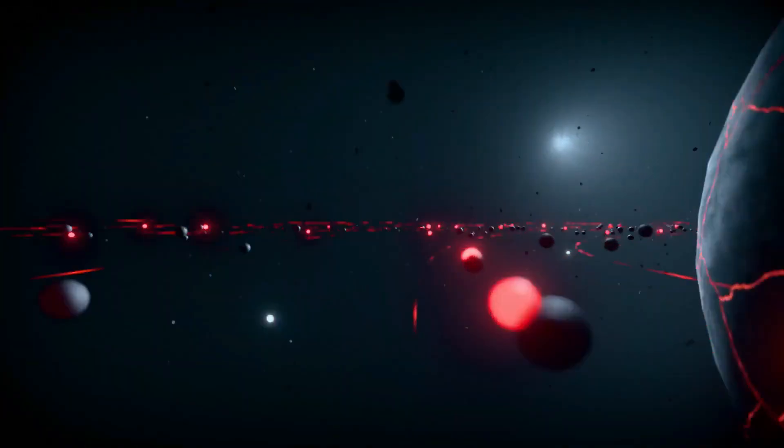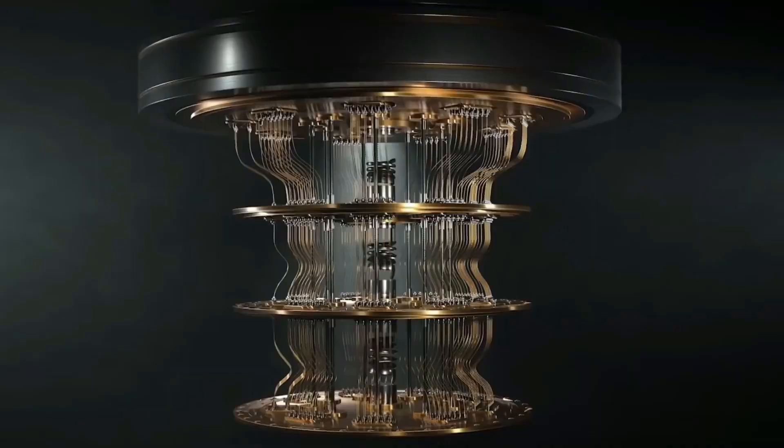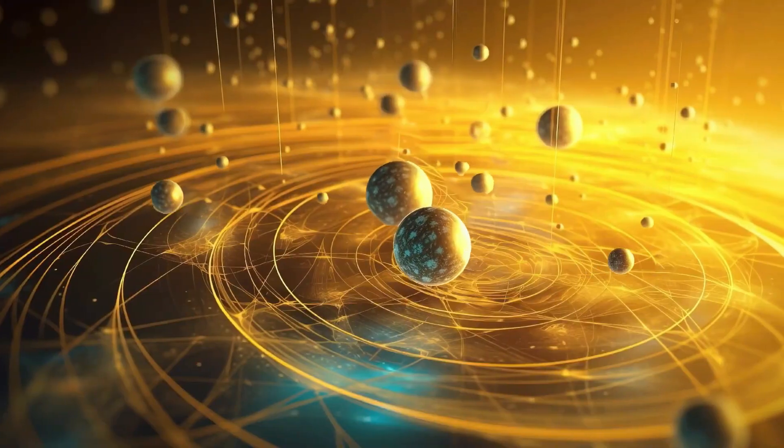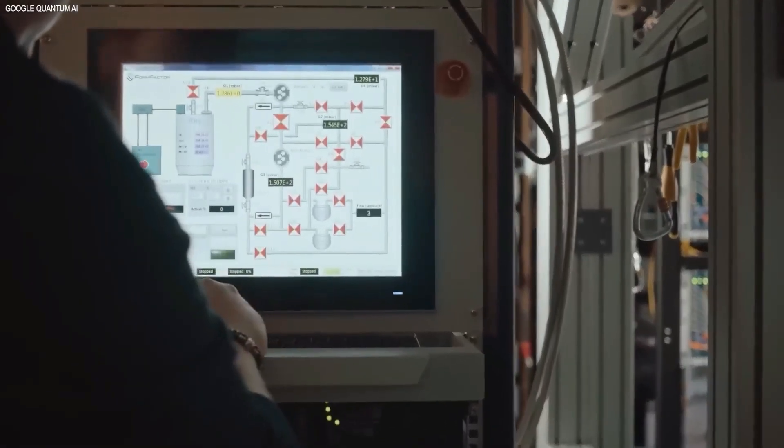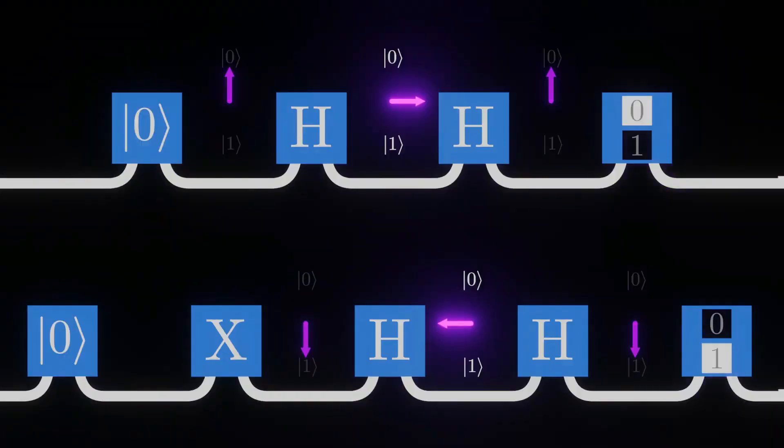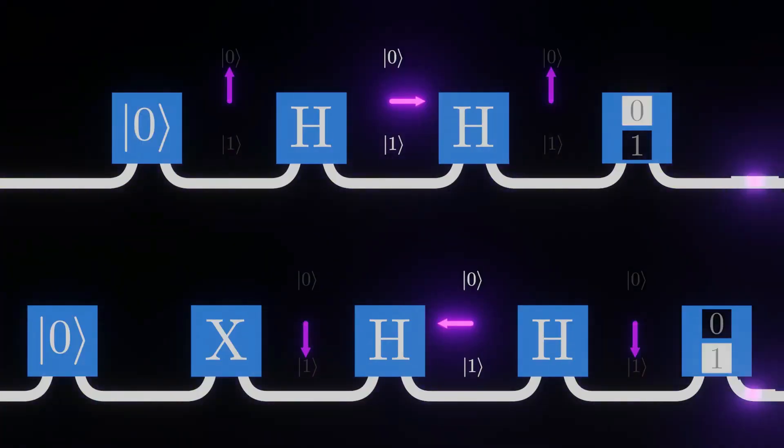This understanding has profound implications for quantum communication and cryptography. Quantum key distribution systems already use entanglement to create theoretically unbreakable communication channels. These systems work because any attempt to intercept the quantum information disturbs the entanglement between parallel universes, immediately alerting the communicating parties to the security breach.